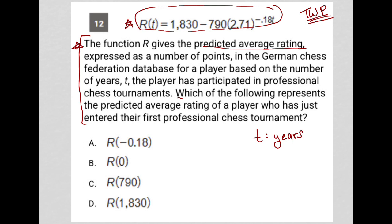The next sentence: which of the following represents the predicted average rating of a player who has just entered their first professional chess tournament? That's what this function does — it gives the predicted average rating. So this question has to do with this t value, the number of years the player has participated.